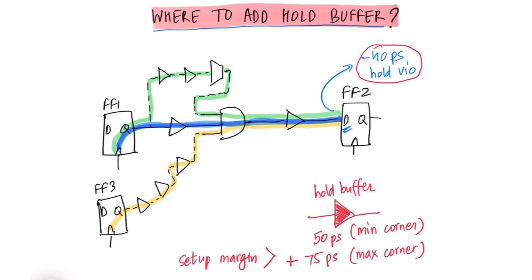So let's say that the setup margin or the setup slack on our original blue path is plus 100 picoseconds in the max corner. Let's say that the setup slack on the green path which is slightly longer is plus 50 picoseconds in the max corner. And the setup slack on the FF3 to FF2 timing path is plus 60 picoseconds.